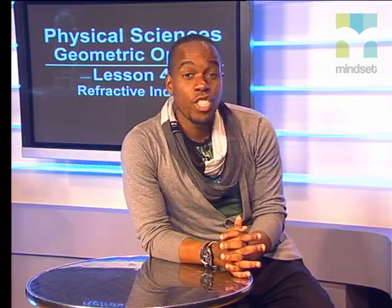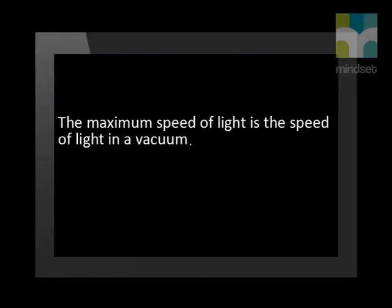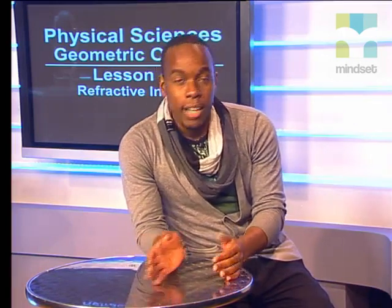The first thing we need to remember is that the speed of light is constant as it travels through a specific medium. It does not slow down or speed up while in that medium. The maximum speed of light, which is the speed of light in a vacuum, is 3 × 10⁸ meters per second. The speed of light in air is very close to its speed in a vacuum, so we use 3 × 10⁸ meters per second in air as well.